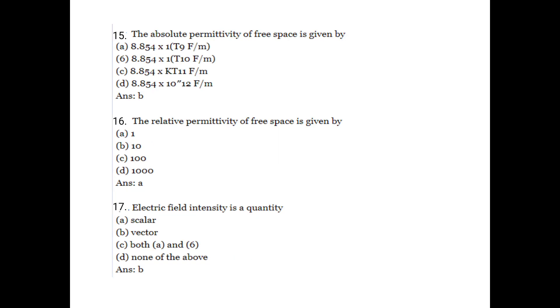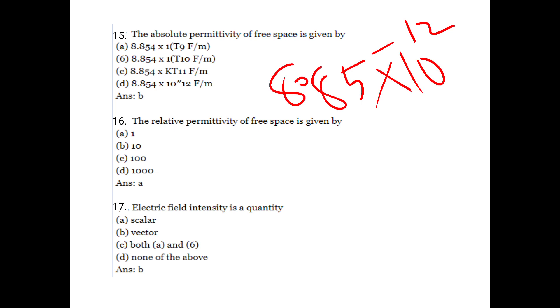Absolute permittivity of free space is given by a constant value: 8.854 into 10 raised to minus 12 farads per meter. The relative permittivity of free space is one.